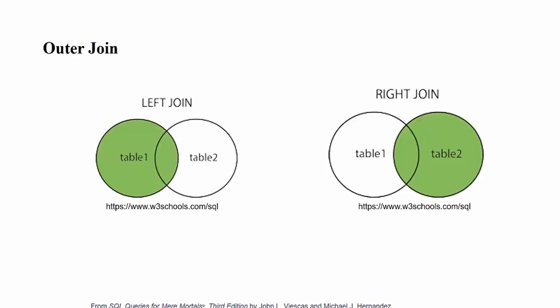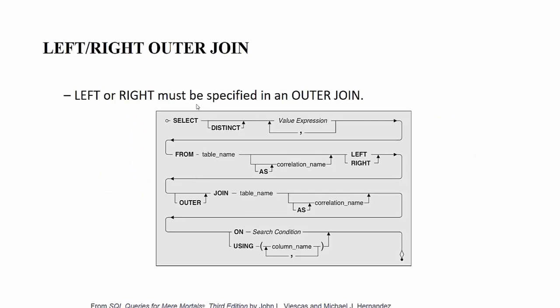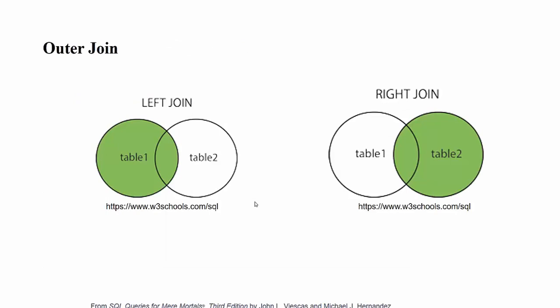Remember in the sets area we were looking for specific conditions in one table and not the other. Basically, we have two types of outer joins: left join and right join. The left join is named because the first table after the FROM clause is the left table, and the second table is on the right side of the join.